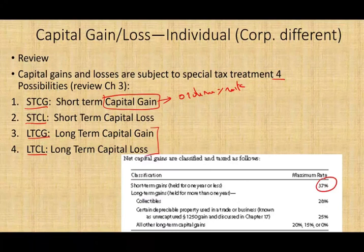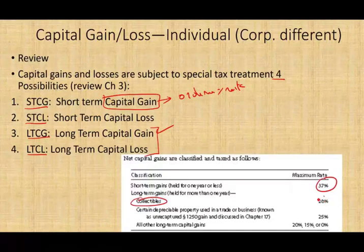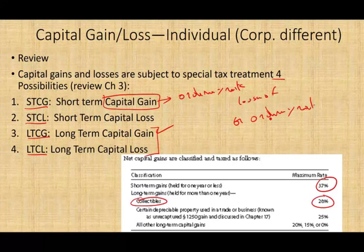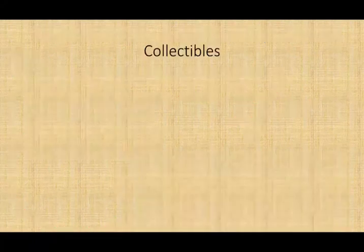If you have a long-term capital gain, you first ask yourself if it's a collectible. If it's a collectible, you choose the lesser of 28% or your ordinary rate. We said ignore the 25% for now. If you have a long-term capital gain that is not a collectible, you could be subject to 20%, 15%, or no tax on that long-term capital gain.